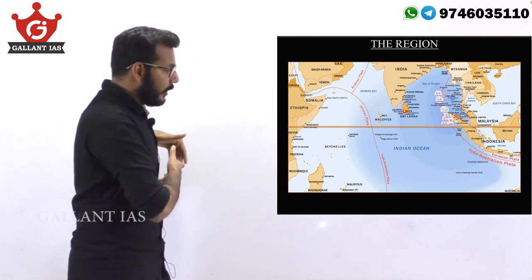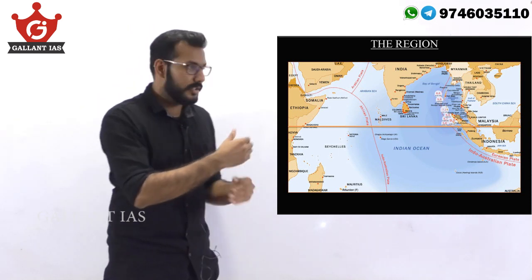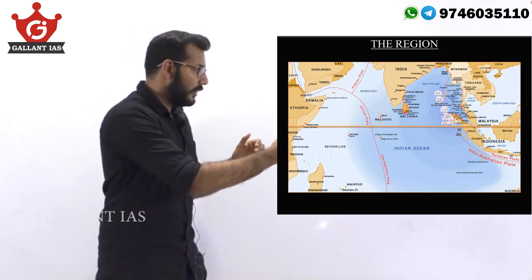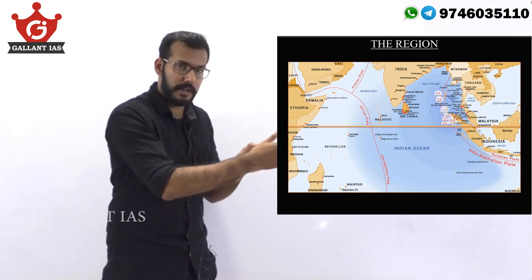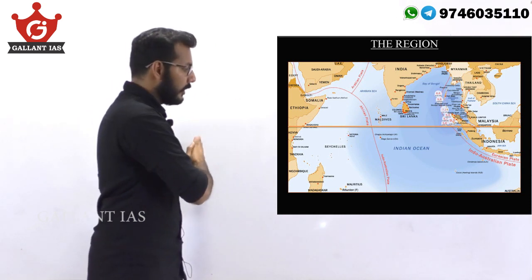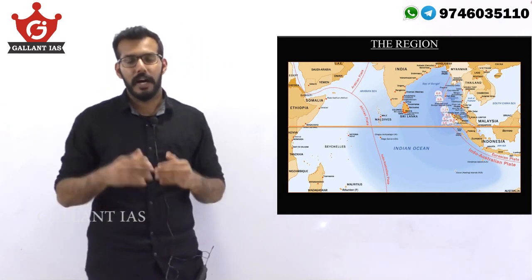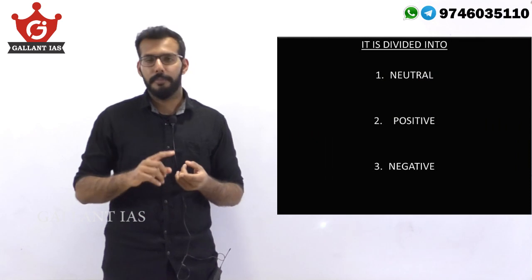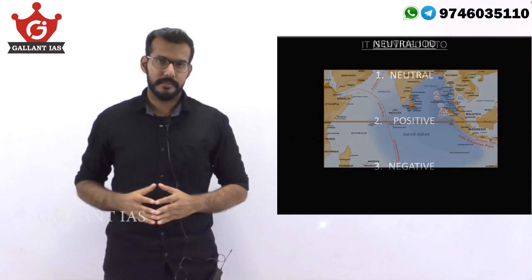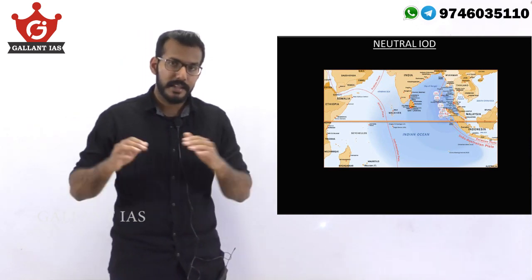It is along the equator, near the equatorial Indian Ocean region, that the Indian Ocean Dipole switches — from a warm western Indian Ocean and cool eastern Indian Ocean during a positive phase, to a warm eastern equatorial Indian Ocean and a cool western equatorial Indian Ocean during a negative phase. Indian Ocean Dipole, or IOD, is divided into three phases: the positive, the negative, and the neutral. During a neutral phase, the equatorial region of the Indian Ocean is evenly warm.